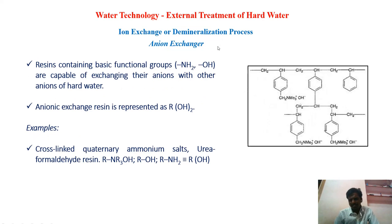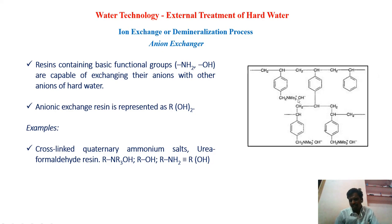The next type is the anion exchanger. These anion exchangers also have a linear polymer chain resin. These resins carry OH⁻ ions with the functional group, which is a quaternary ammonium salt. That OH⁻ can be exchanged with negatively charged anions from the water — the OH⁻ ions are released and chlorides or sulfates get accommodated. That is called anion exchanger resin.